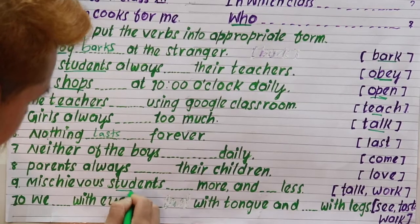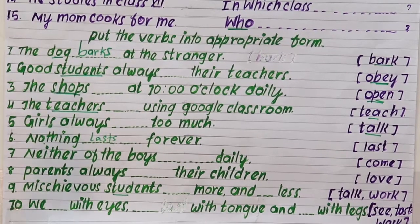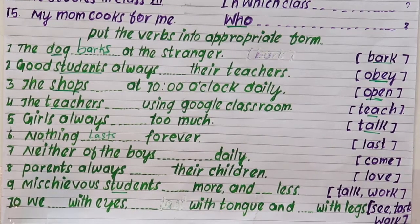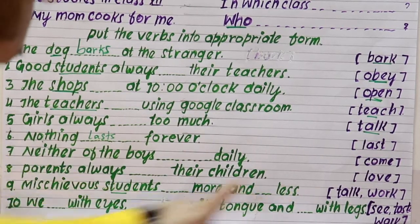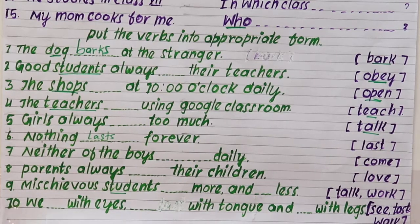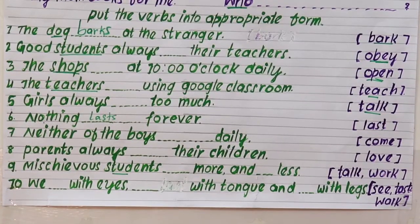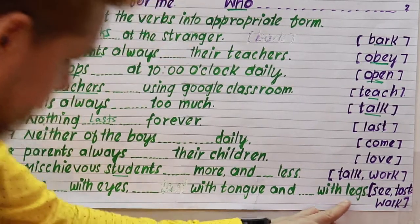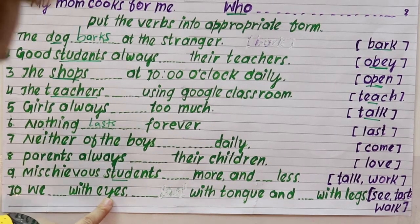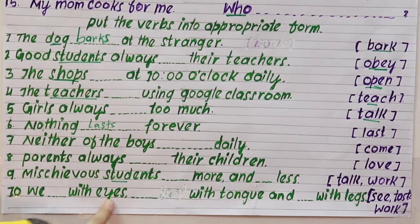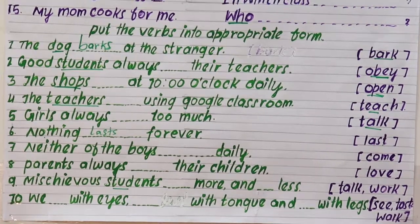Parents is plural — parents always love their children. Mischievous students — naughty students — what happens? Mischievous students talk more and work less. We see with eyes, taste with tongue, and walk with legs.